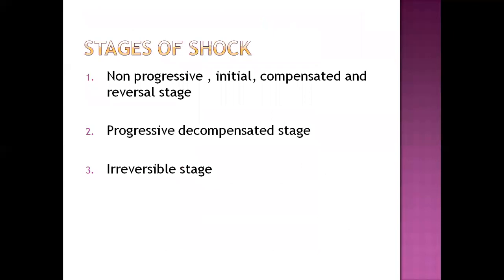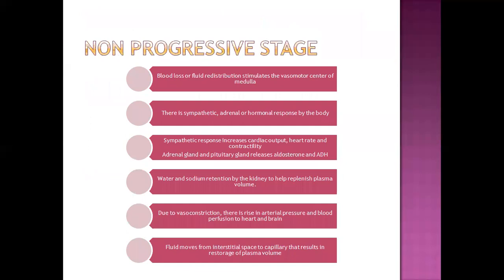There are three stages of shock. The first stage is non-progressive — from this stage, shock can be reversed. The second is the progressive decompensated stage — from this stage, shock cannot be reversed. The third is the irreversible stage. In the non-progressive stage, there is blood and fluid loss, which leads to stimulation of the vasomotor center of the medulla.